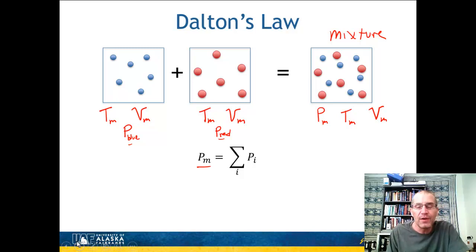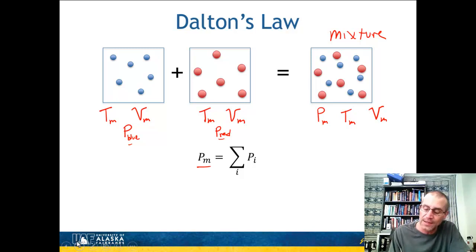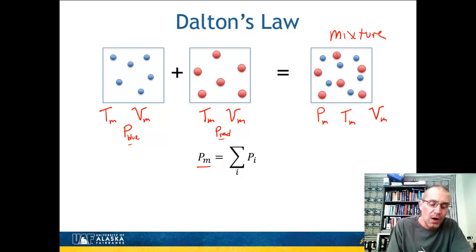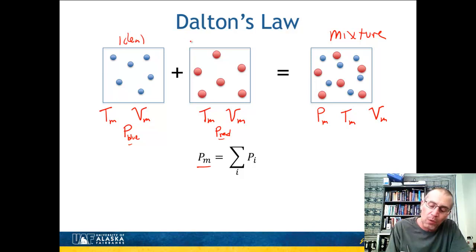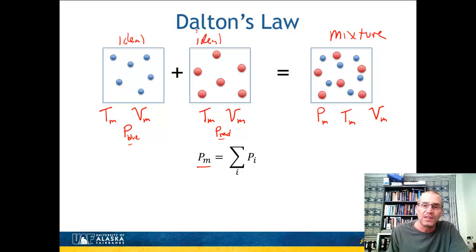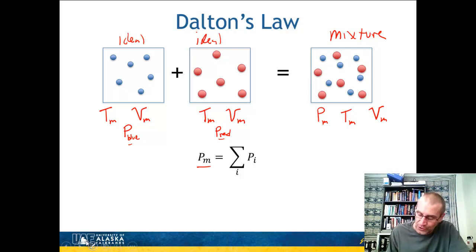Dalton's Law tends not to be a very good approximation when looking at real gas behavior — things that are not ideal gases. By putting all the molecules into two different bins, we've lowered the pressure, which means each one is going to act a little more ideal than the mixture would, and so they won't give us a good representation of the pressures.